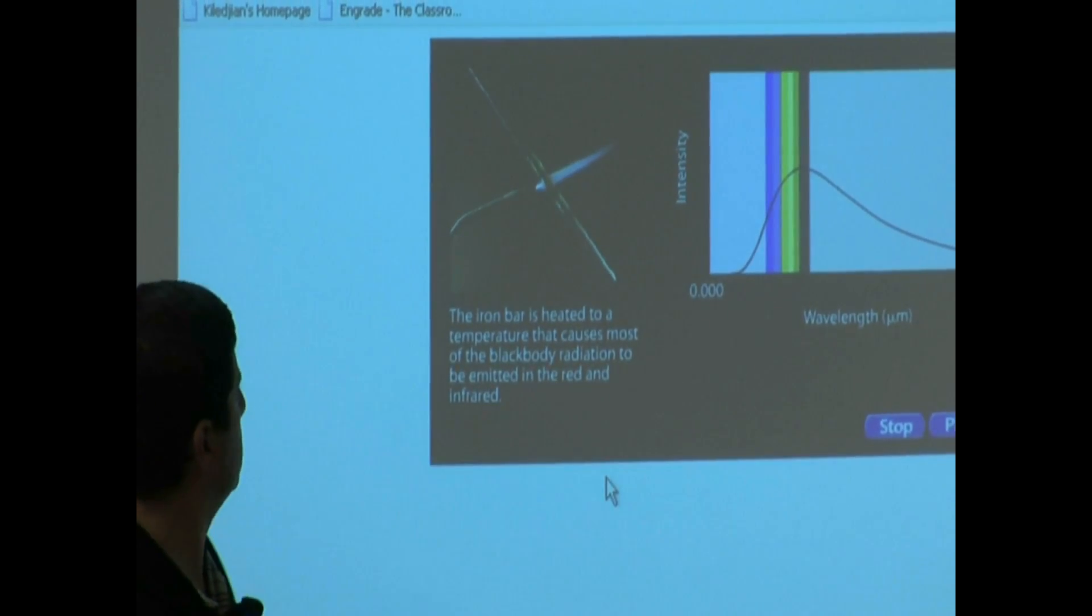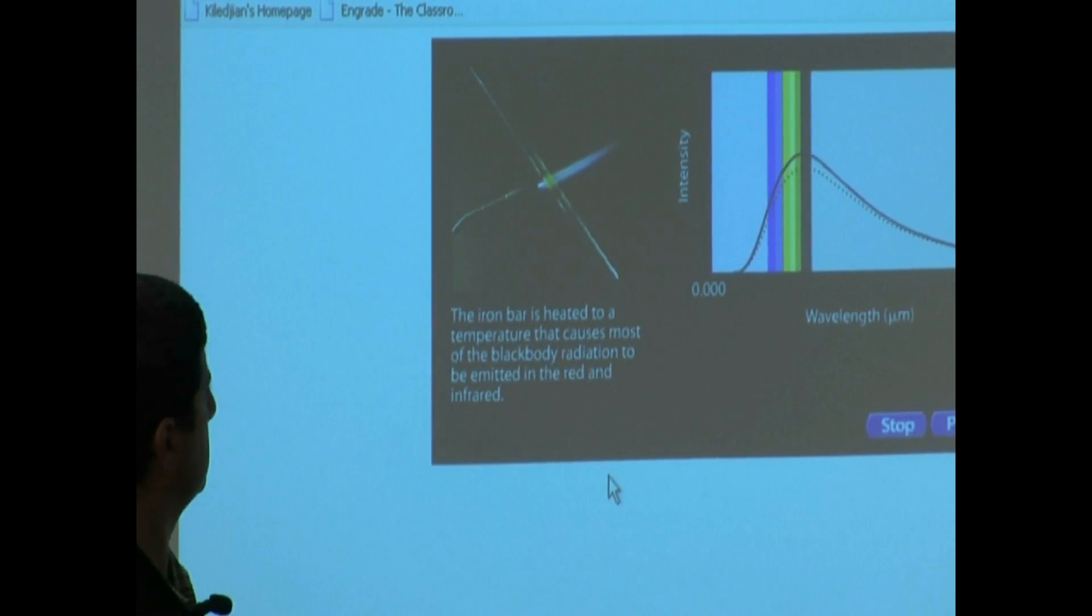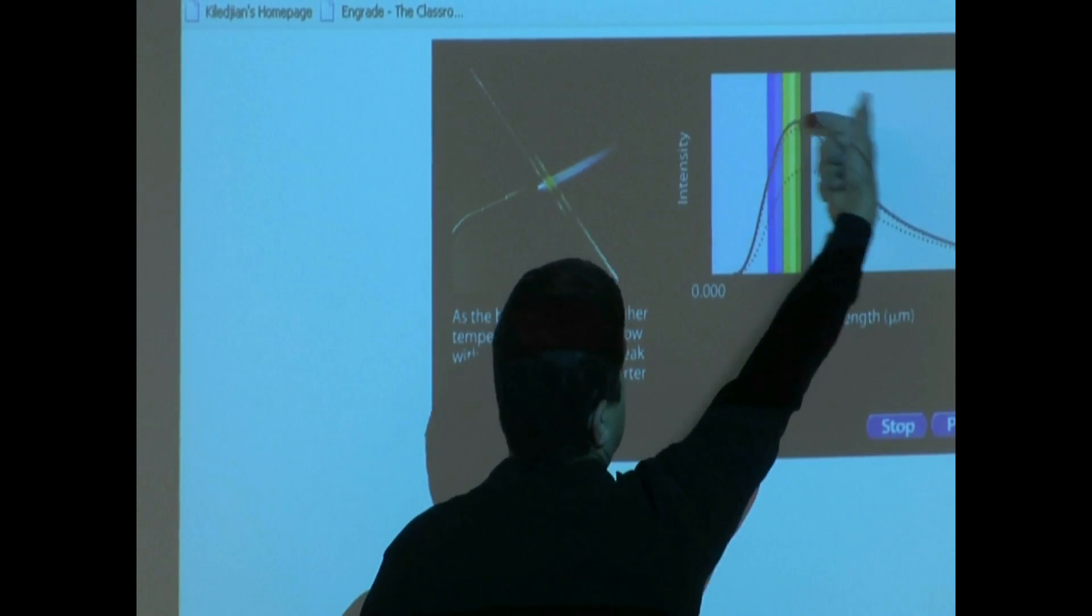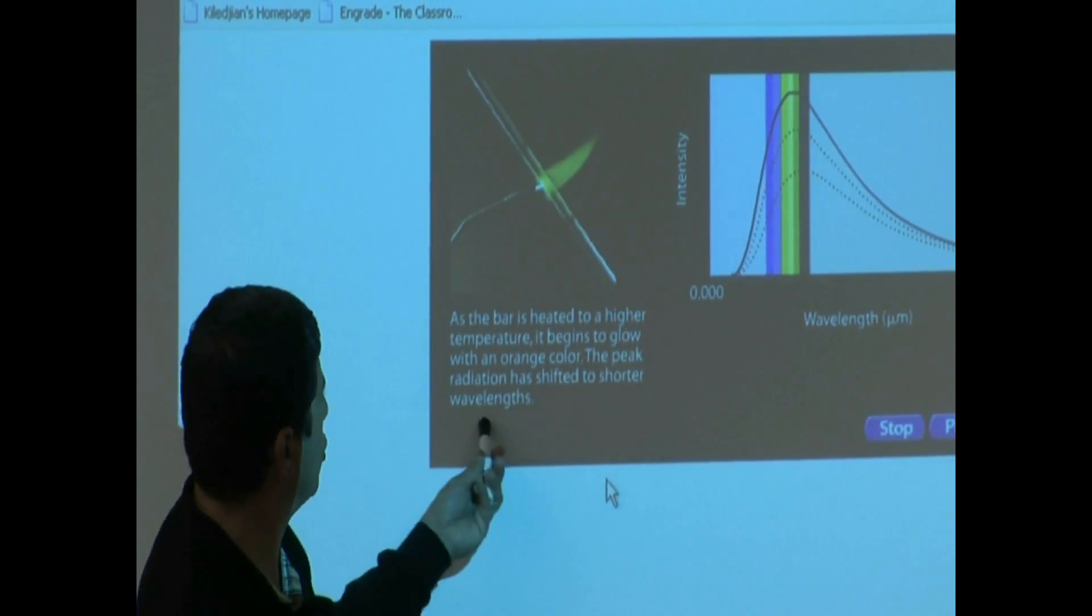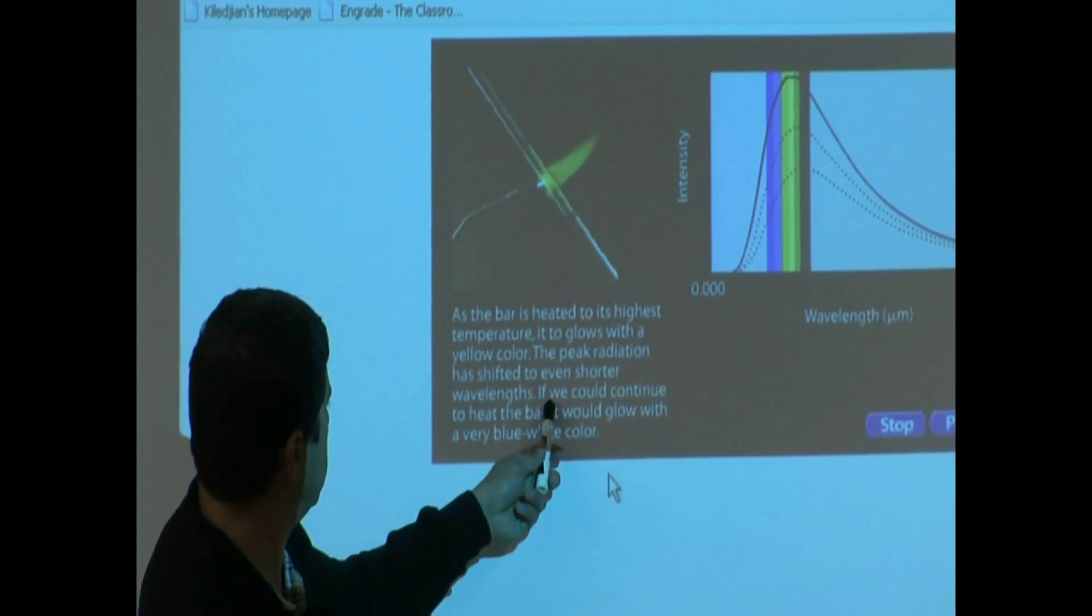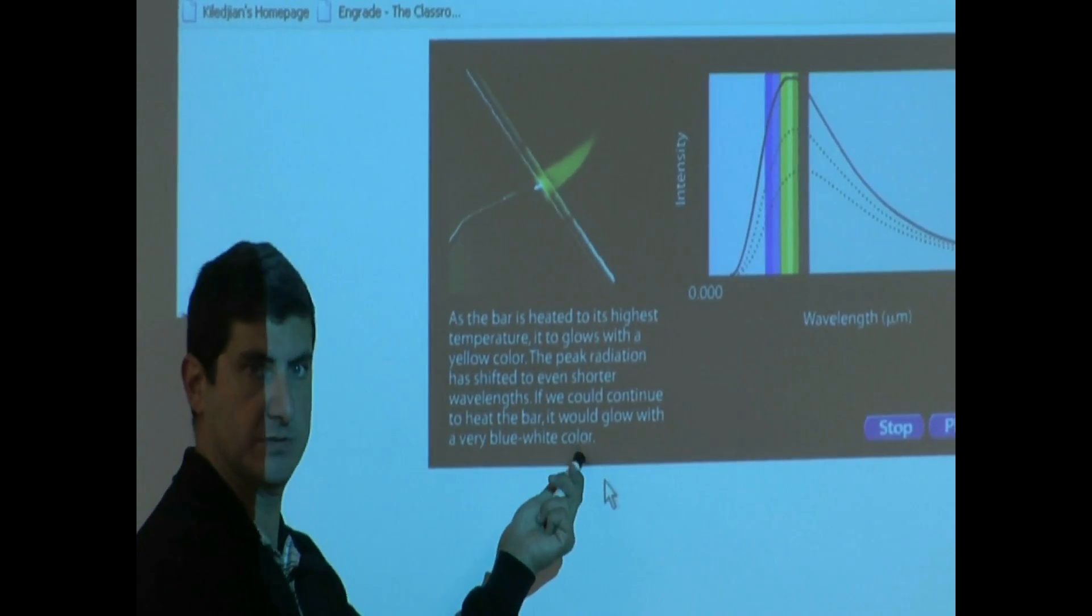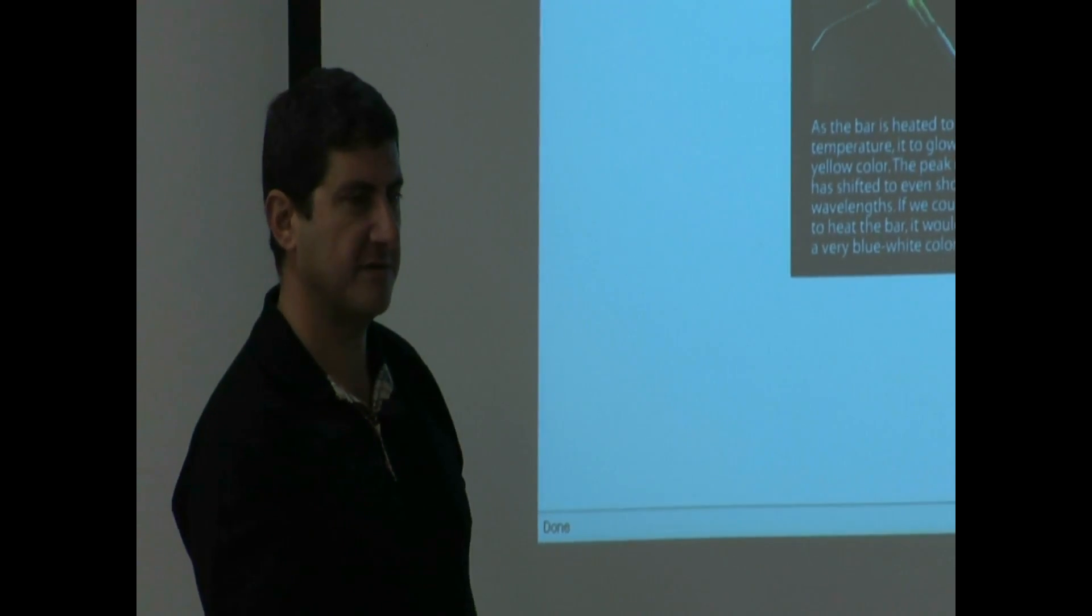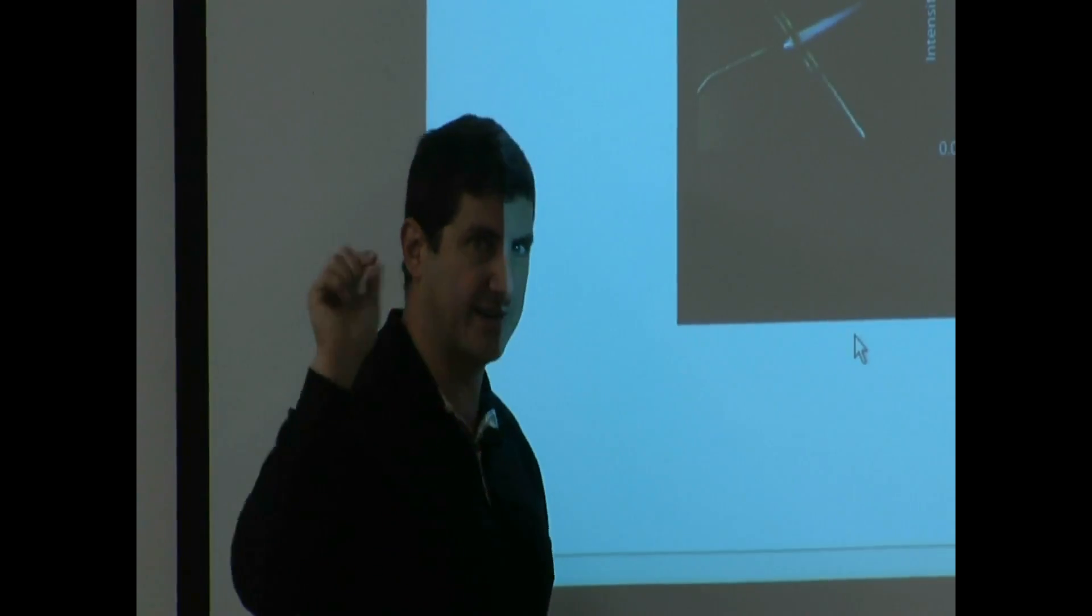It first is red. Then, they keep heating it. The radiation is going up, but it's also shifting to the left. The peak radiation has shifted to shorter wavelengths. If we could continue to heat the bar, it would glow with a very blue-white color. Those are the hottest stars, the blue-white ones. The yellows are in the middle. The reds are the coolest.